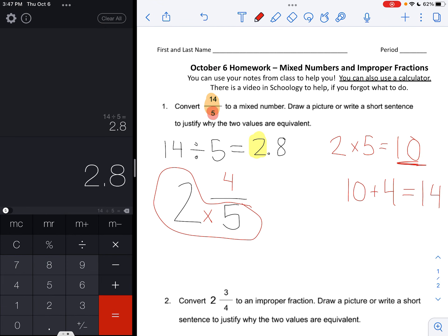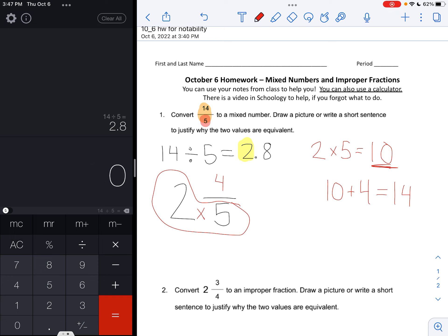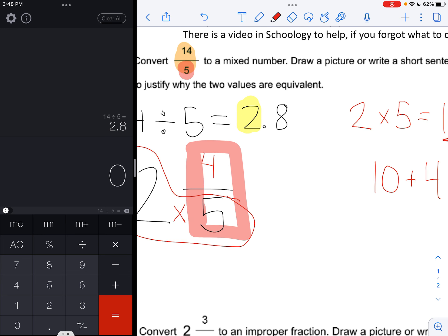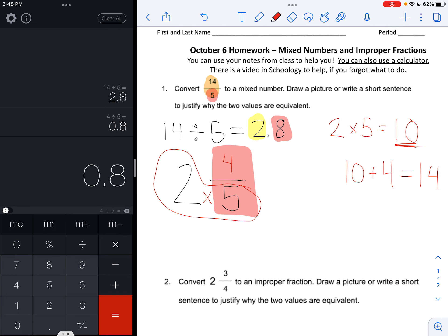So 2 and 4 fifths is going to be the mixed number answer for our question. And one thing that you can do to check and make sure you have the right fraction in your mixed number is take this fraction right here, 4 fifths, and put it into your calculator as a division statement. So you would say 4 divided by 5, and that gets you 8 tenths, which is the number after the decimal point in the decimal that we had when we divided 14 by 5. So we know that this fraction is correct.